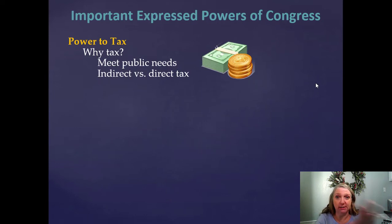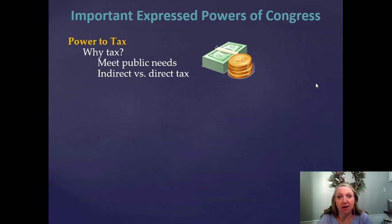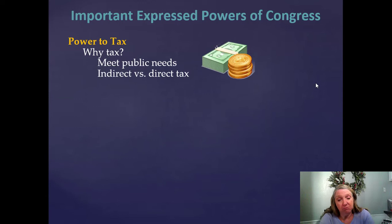Now, some important expressed powers of Congress. There's the power to tax. We need taxes to meet public needs — we have to pay for defense and to pay people who run various government agencies. People are not going to do those jobs for free. So we need money, and the federal government collects money by taxing. There are direct and indirect taxes.